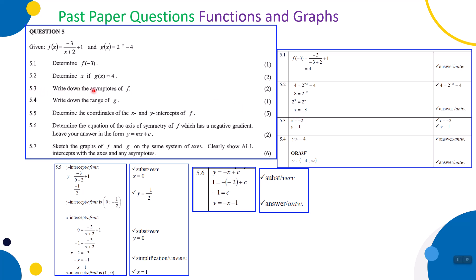5.3, two marks: write down the asymptotes of f. f is a hyperbolic function and it has two asymptotes — one horizontal and one vertical. The question is: what value can I not substitute for x? I cannot put in negative 2, therefore x = -2 is a vertical asymptote. The constant, the plus 1, gives us y = 1 as the horizontal asymptote. One mark for x = -2 and one mark for y = 1.